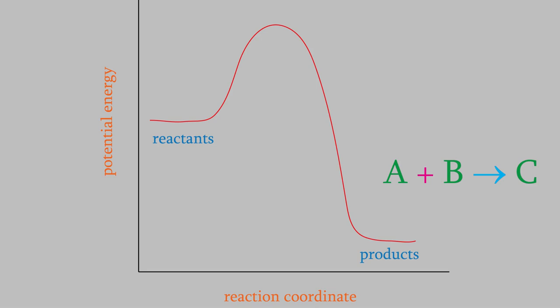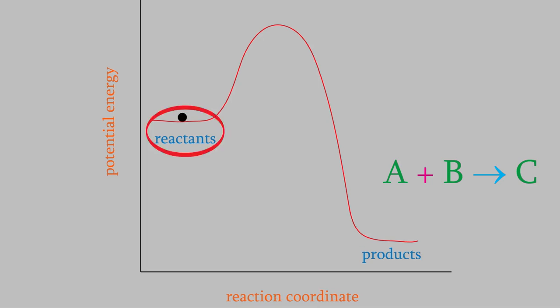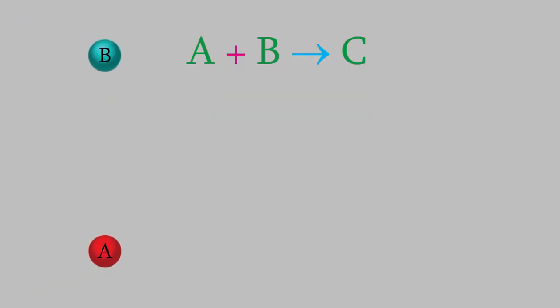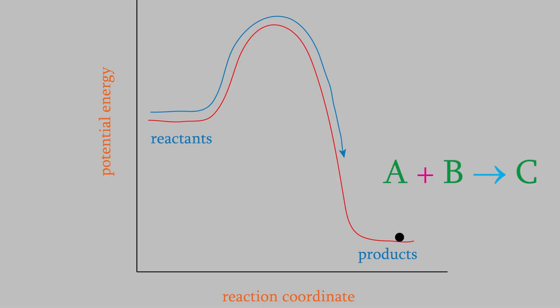At the beginning of the reaction, the reactants have this much potential energy. In order for the reaction to happen, they'll need to get over this potential energy barrier. That's where the collision comes in. If the molecules are moving quickly enough, they'll have a lot of kinetic energy. Some of that kinetic energy can get transformed into potential energy, and that's what's needed to get over this barrier.